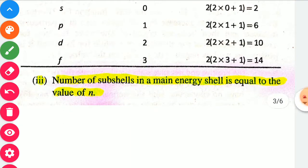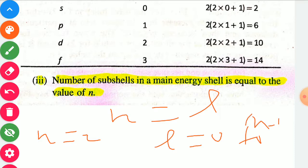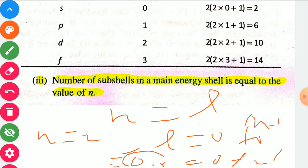The third conclusion: the number of sub-shells in a main energy shell equals the value of n — meaning the value of n is always equal to the number of azimuthal quantum number values (sub-shells). For n equal to 2, l values are 0 and 1, giving 2 sub-shells.